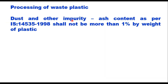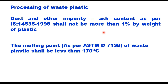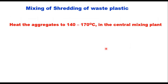Dust and other impurities are measured in terms of ash content as per IS 14535, and it should not exceed 1 percent by weight of plastic. The waste plastic starts degrading at temperatures above 180°C, and therefore the melting point of waste plastic to be used in roads shall be less than 170°C when determined as per ASTM D7138. Once the waste plastic has been shredded and tested for impurity and melting point, the next step is to mix it with aggregate and bitumen to prepare the mixture.